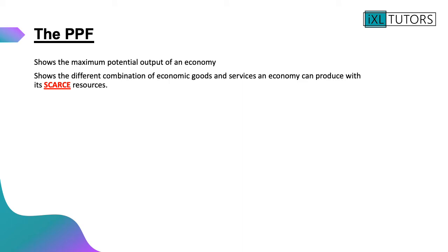The production possibility frontier shows the maximum potential output of an economy — so if it's using all of the resources it has, how much of each of these goods or services can it produce? It shows different combinations of economic goods and services that can be produced with the scarce resources available. It links together really nicely the previous topics of the economic problem: choice, scarcity, and opportunity cost.